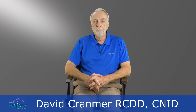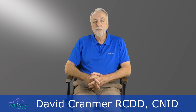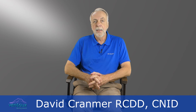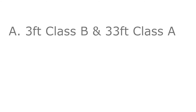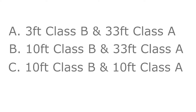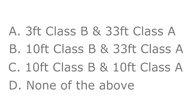As I told you in my last video, each week I'll end with a question. So, for today, I'm asking: at what distance are resonant dipoles placed in order to measure for FCC Class A and Class B limits? Is it A, 3 feet for Class B and 33 feet for Class A? Is it B, 10 feet for Class B and 33 feet for Class A? C, 10 feet for Class B and 10 feet for Class A? Or D, none of the above?